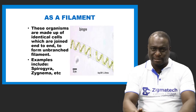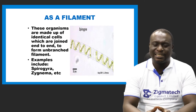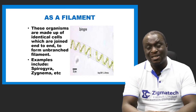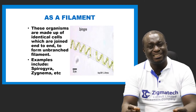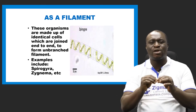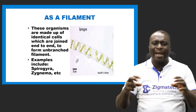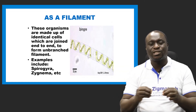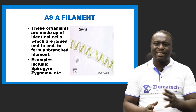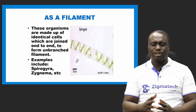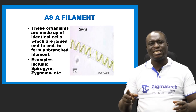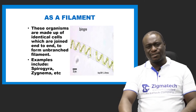Cells can also exist as filaments. They are made up of identical cells joined end to end to form an unbranched filament. Examples include spirogyra and zygnema. As you can see on screen, spirogyra is joined end to end with a spiral chloroplast found within it.